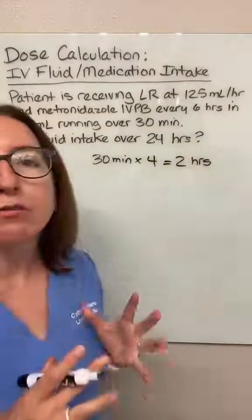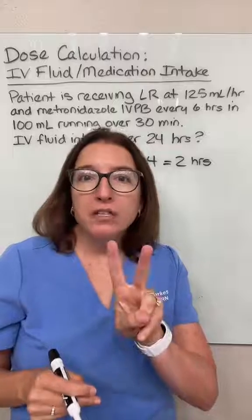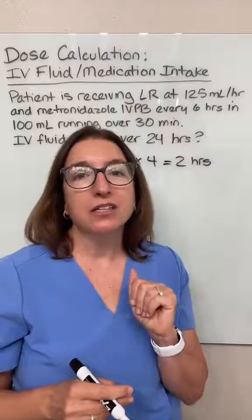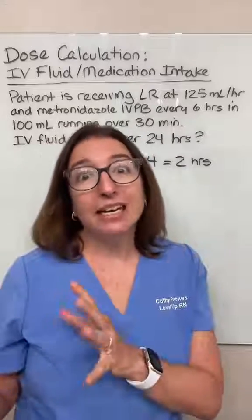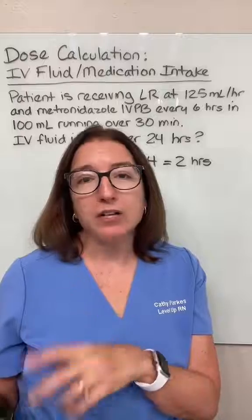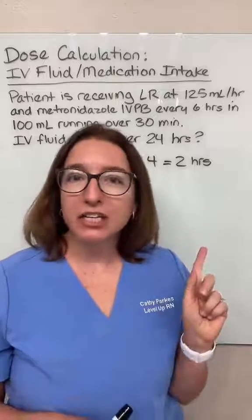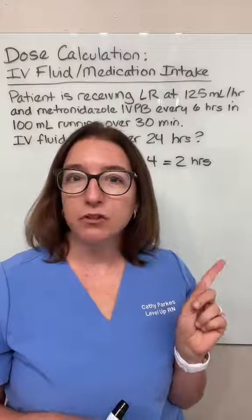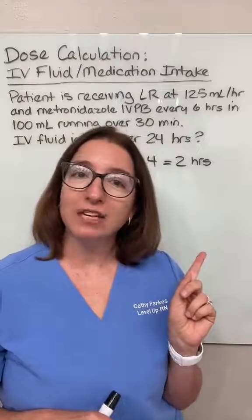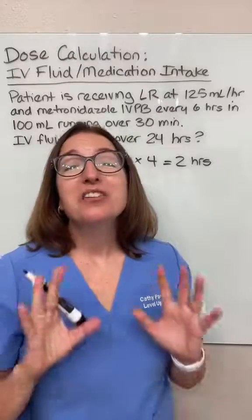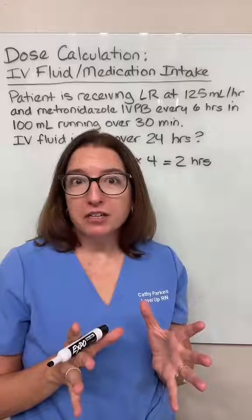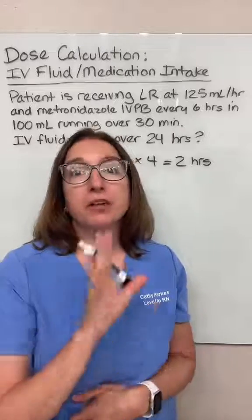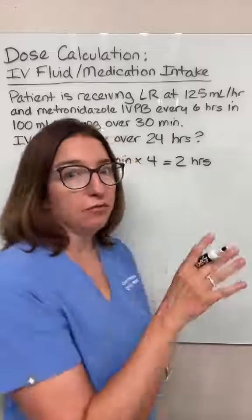So within a 24-hour period, for two of those hours the patient is going to be getting their IV piggyback. And for the remaining 22 hours, they'll be getting their continuous infusion of lactated ringers. So now we can figure out how much fluid the patient is receiving from their continuous infusion.